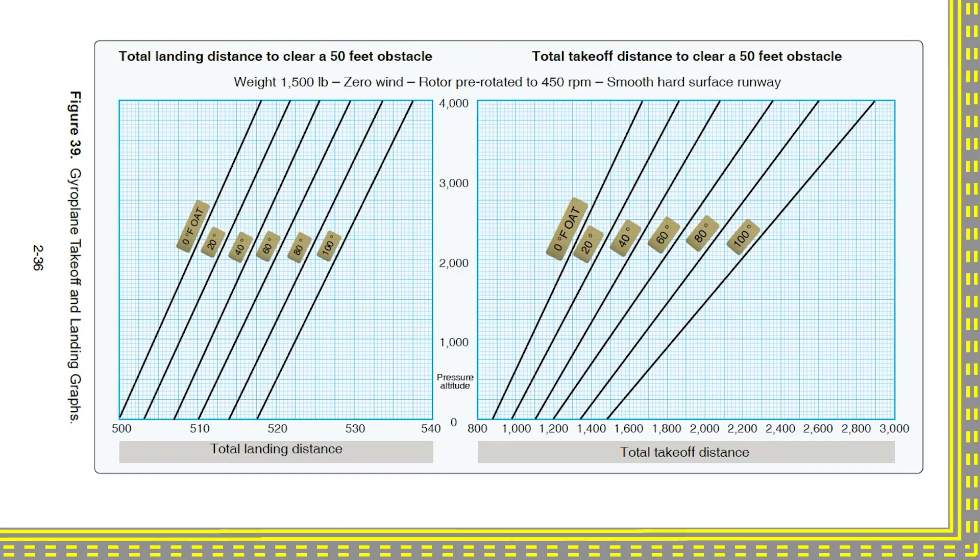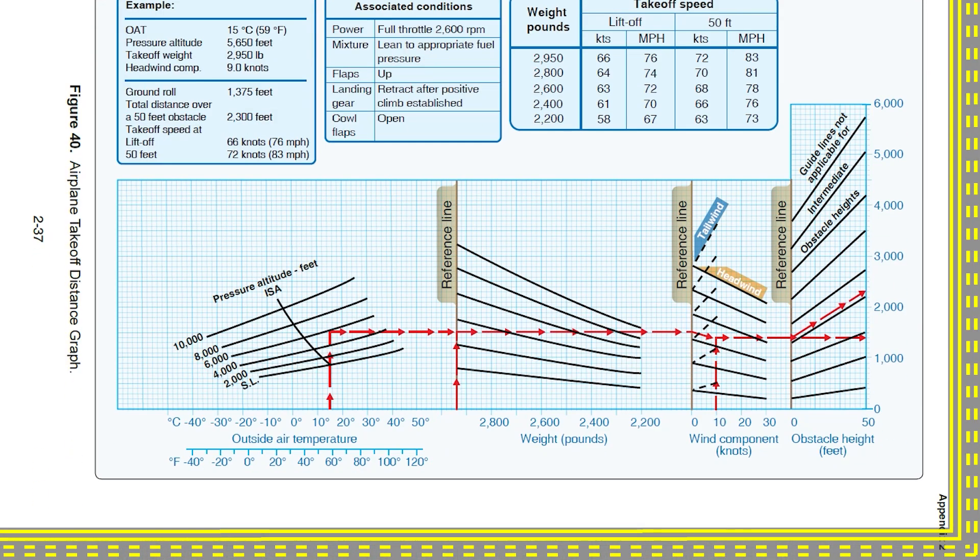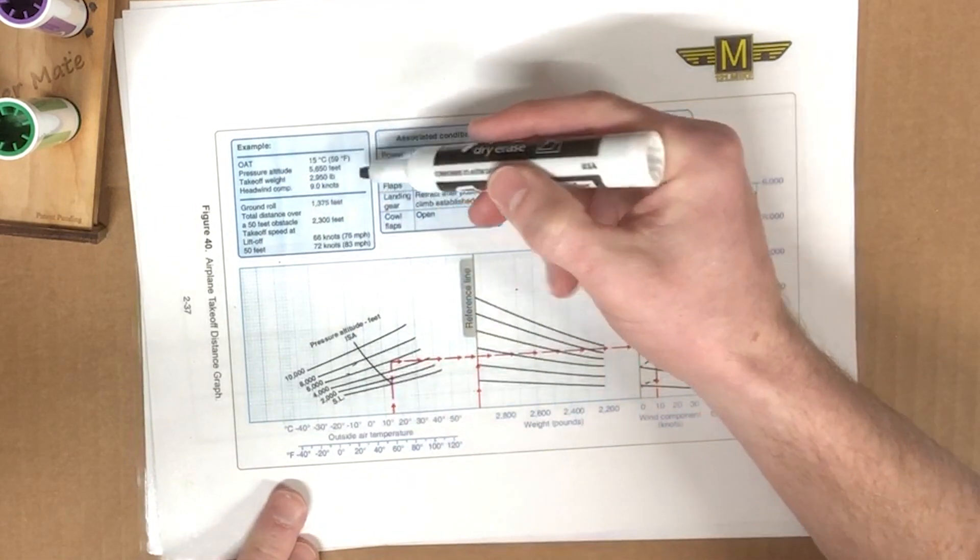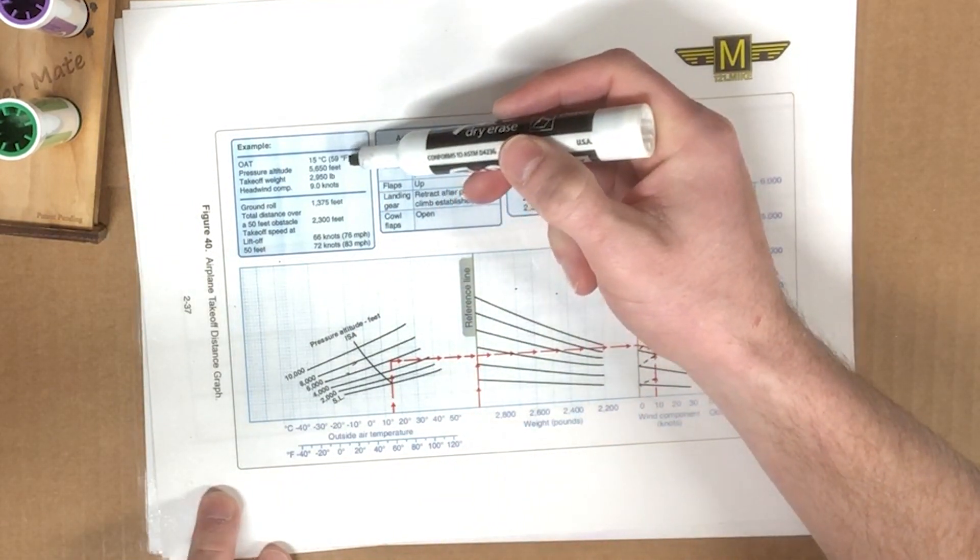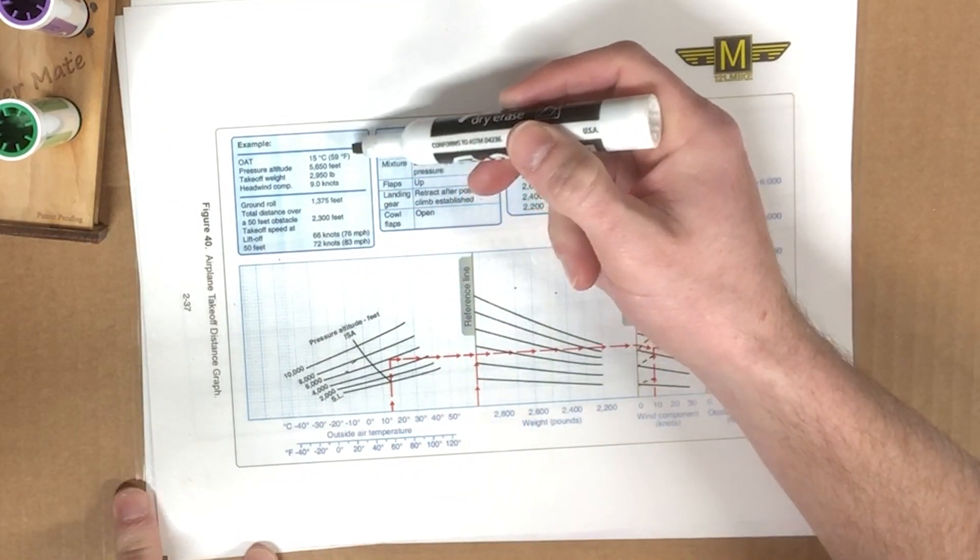In the FAA sport, recreational, and private pilot test supplements, you'll see charts like 236 for a gyroplane and 237 for an airplane. Now 237 for an airplane looks tricky, but it does all the math for you. There's even an example scenario worked out here in red. I'm going to walk you through the example in red.